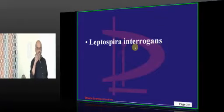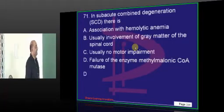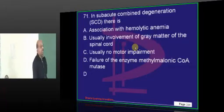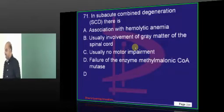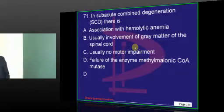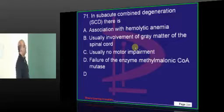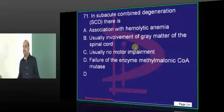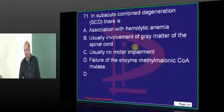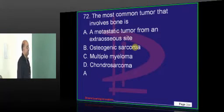Question mark-shaped bacteria: Leptospira. In subacute combined degeneration of the spinal cord, it is the vitamin B12-dependent methylmalonyl-CoA mutase which is fundamentally deficient.